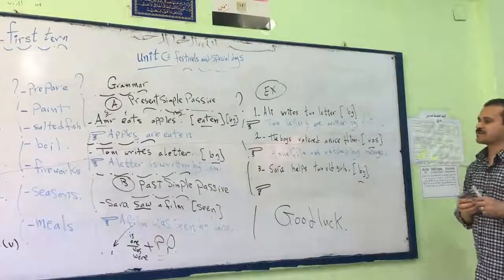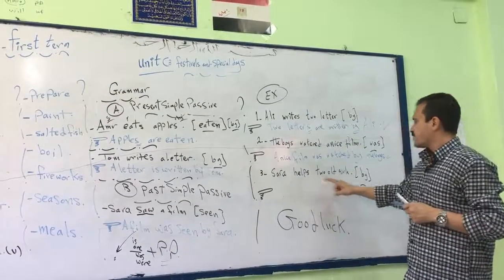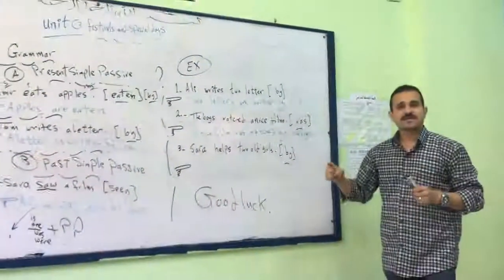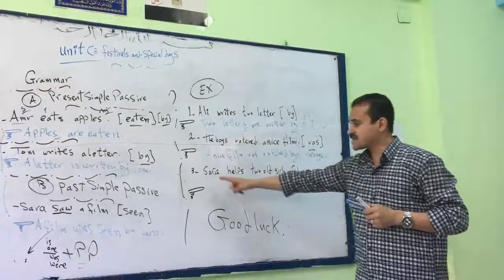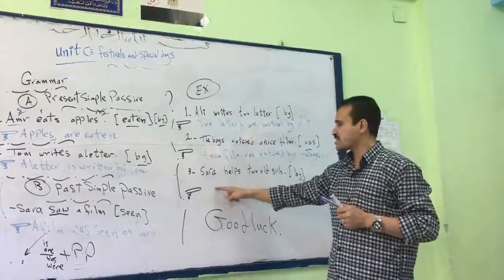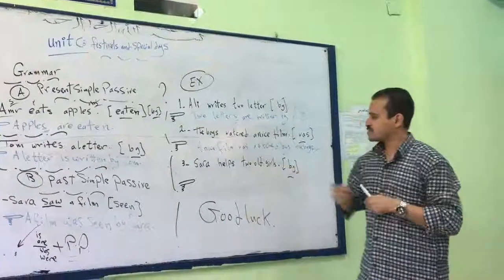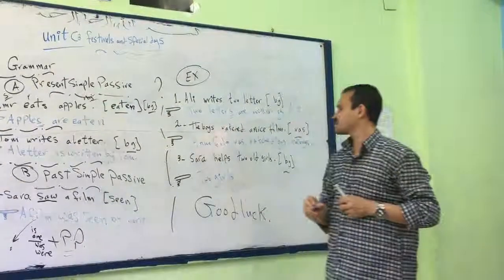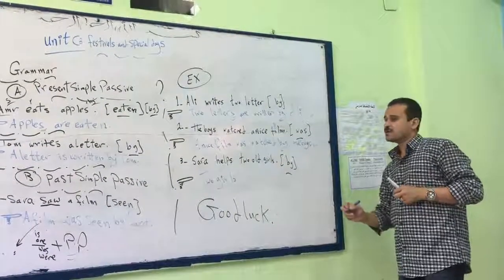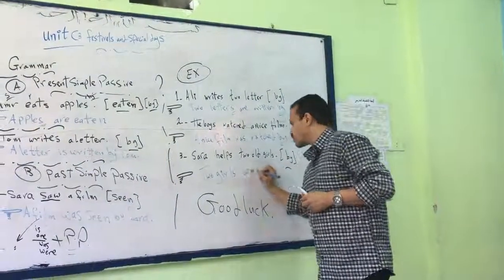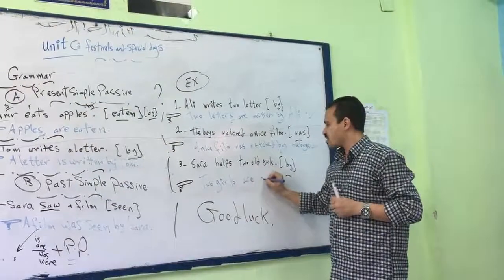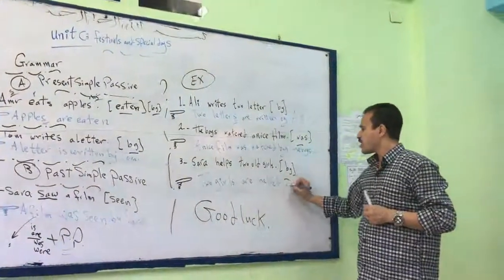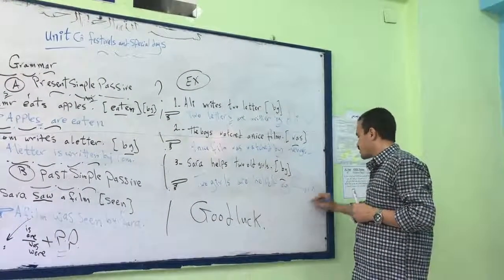Good, right. Number three: Sarah helps two old girls. Use by. Yes, search for the object. Is it Sarah? No, this is the subject, this is the verb. Two girls, so begin with it. Two girls. Is or are? This is plural, so we use are. Two girls are, and the past participle: helped by Sarah. That's right.